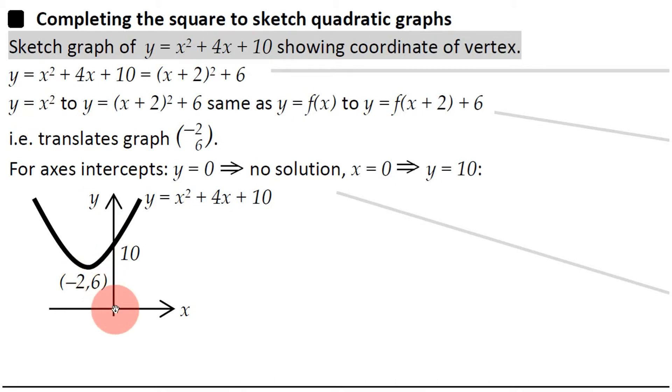Because if you go from (0, 0) and you go minus 2, so left 2 and up 6, you'll obviously be at (-2, 6).